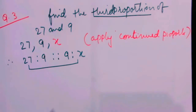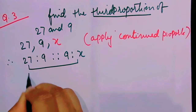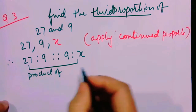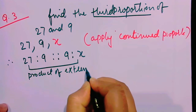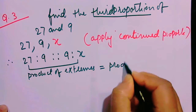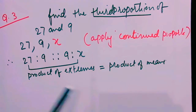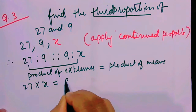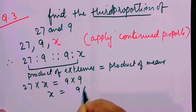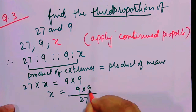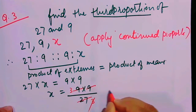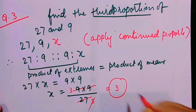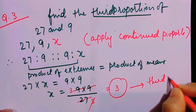What are you going to apply? You will apply that the product of extremes is equal to product of means — as I had taught you earlier. Applying this formula: 27 into x will be equal to 9 times 9. So x will be equal to 9 times 9 by 27. Let me solve this: 9 three times and then 3, 3 times is equal to 3, which is your third proportion.